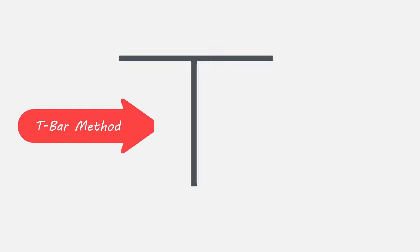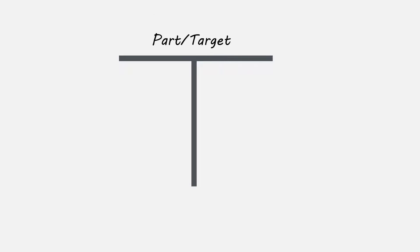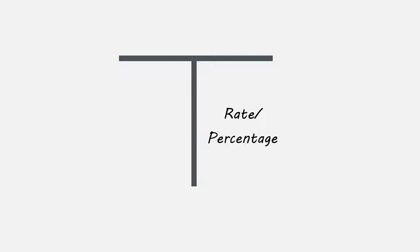We will be putting the T-bar method to work for all three. If you can remember how to draw the T-bar and label its components, then you'll be on your way to taking the fear out of real estate math. Let's look at the T-bar. On the top of the bar, you'll place the part or target. On the bottom left side, you'll place the whole or total. On the right side of the T-bar, you'll place the rate or percentage.